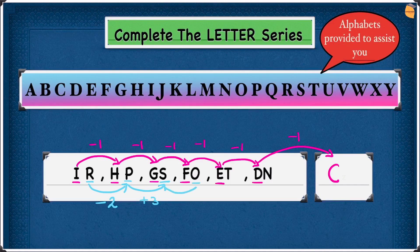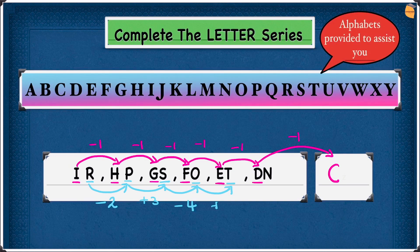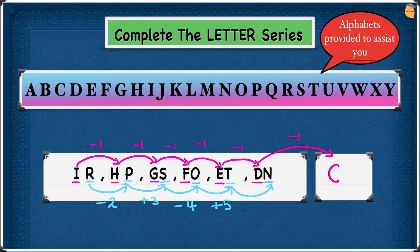S to O: S is here and O is here — 1, 2, 3, 4 — this time we're going minus 4, so backwards. Write minus 4. Now O to T: O is here and T is here — 1, 2, 3, 4, 5 — so plus 5. Write plus 5. From T to N: T is here — 1, 2, 3, 4, 5, 6 — going 6 backwards, so minus 6.